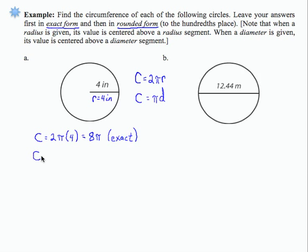If I want to find the rounded form, I'm going to take 8 times 3.14. 3.14 is an approximation for pi. If I perform the multiplication there, I get 25.12 rounded to the hundredths place. So this is the rounded form. My units here are inches.